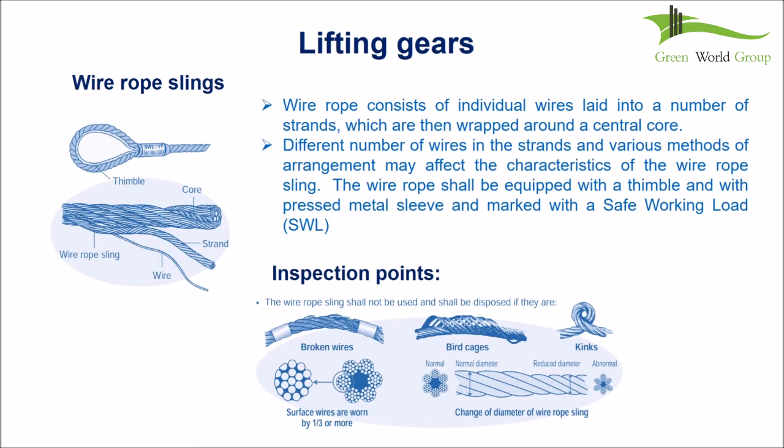Wire rope consists of individual wires laid into a number of strands, which are then wrapped around a central core. Different numbers of wires in the strands and various methods of arrangement may affect the characteristics of the wire rope. The wire rope sling shall be equipped with a thimble and a pressed metal sleeve, and marked with a safe working load (SWL).